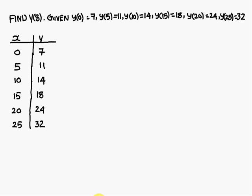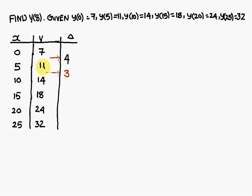Next we have to find the first differences. 11 minus 7 is +4, written between those two values. 14 minus 11 is 3, written between 11 and 14. 18 minus 14 is +4. 24 minus 18 is +6. 32 minus 24 is +8. Always write these differences between the concerned values.